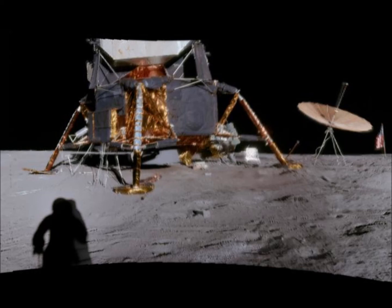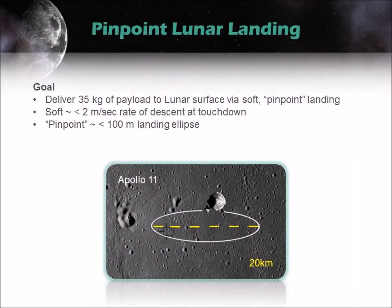Our goal for the Google Lunar XPRIZE competition is to deliver a 35 kg payload safely to the lunar surface. In order to achieve this goal, we must develop autonomous systems with the ability to capture images of the descent terrain and determine the current location of the lander in relation to the lunar surface. The lander must also be able to detect and identify any hazards that could pose a threat to the spacecraft during the landing phase of descent.